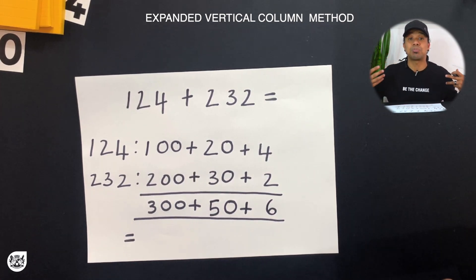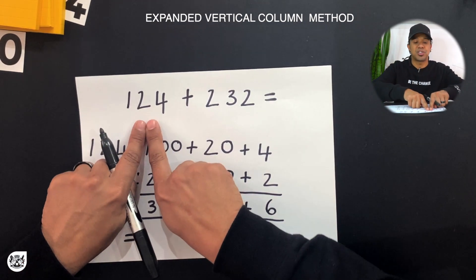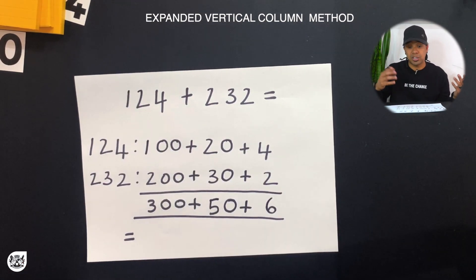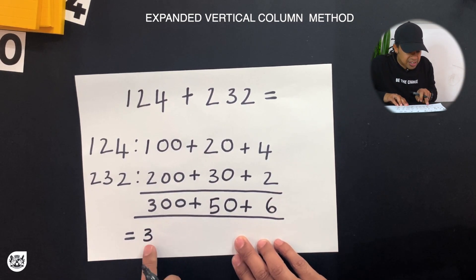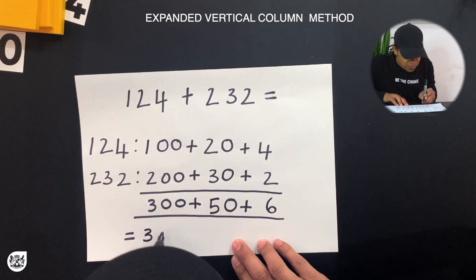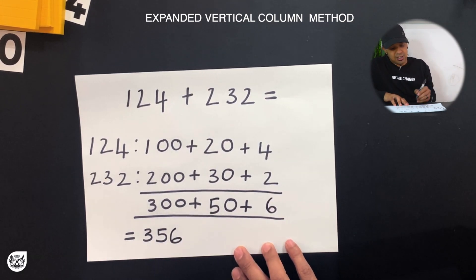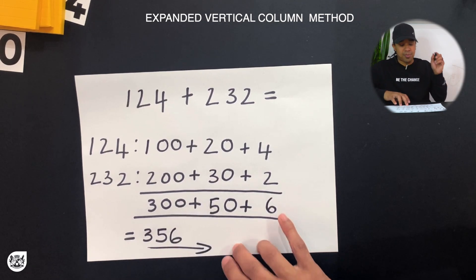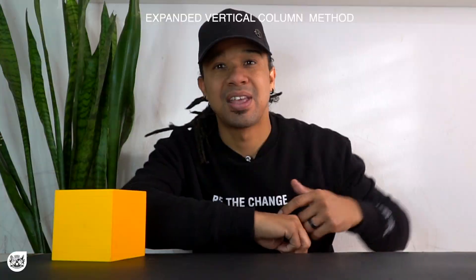Our answer is 300 plus 50 plus 6. We can see that our answer is expanded into its place values, but we want our final answer in standard form. So we've got 300 because 3 is in the hundreds place, 5 in the tens place, and 6 in the ones place. Our answer is three hundred and fifty-six. And that's how you do the expanded vertical column method.